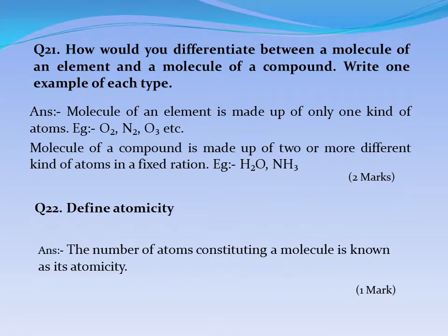Question No. 21: How do you differentiate between a molecule of an element and a molecule of a compound? Write one example of each type. Answer: A molecule of an element is made up of only one kind of atom. Example: O2, N2, O3, etc. A molecule of a compound is made up of two or more different kinds of atoms in a fixed ratio. Example: H2O, NH3.